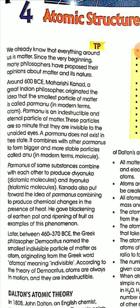Maharesi Kanad, a great Indian philosopher, originated the idea that the smallest particle of matter is called Paramanu, which in modern terms is called atom. Paramanu is an indestructible and eternal particle of matter, and these particles are so minute that they are invisible to the unaided eyes.